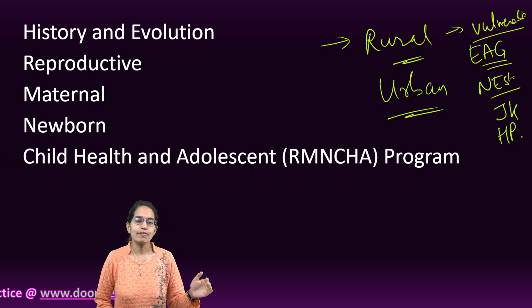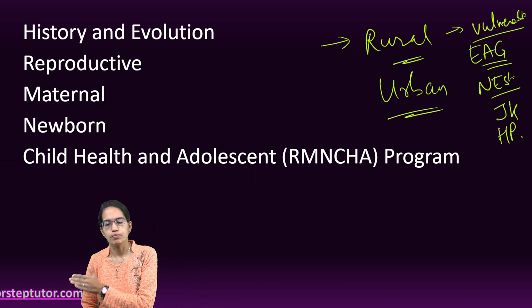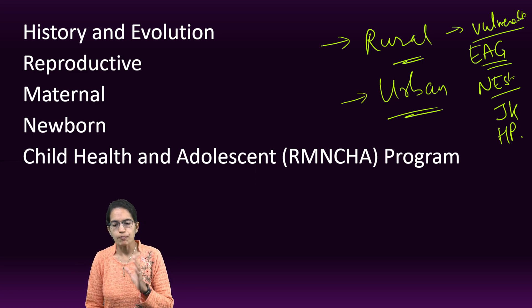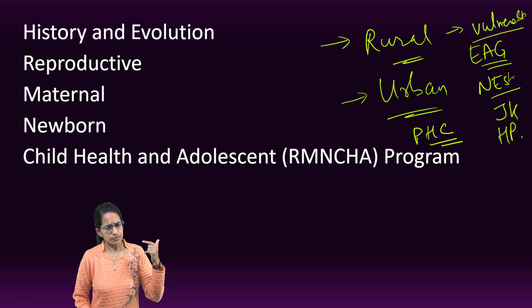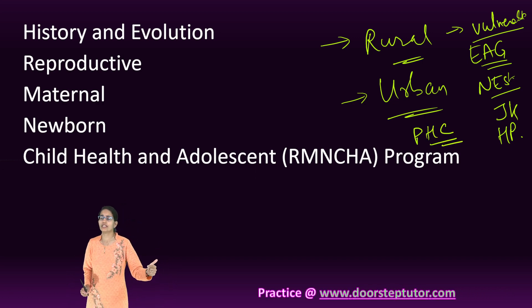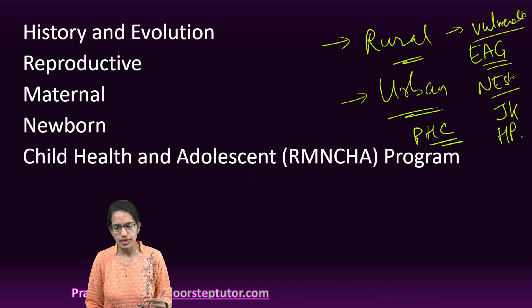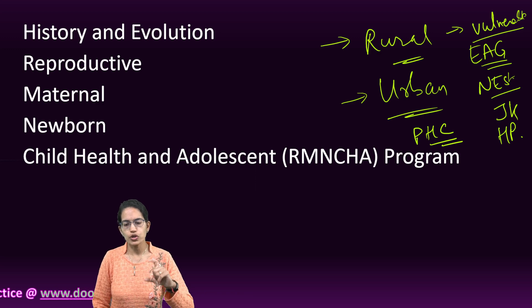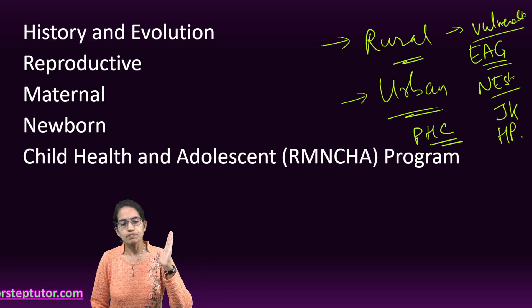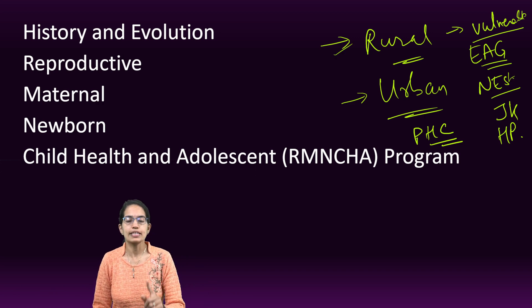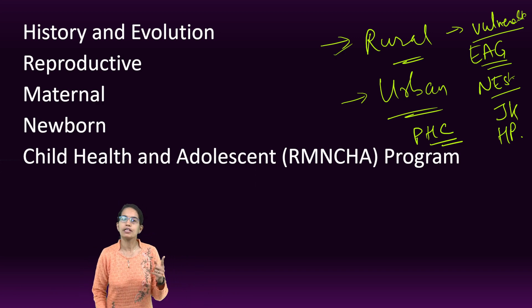The National Urban Health Mission aims to improve the health status of people living in urban areas and provide them with primary health care facilities. For every urban area with a population of more than 50,000, an Urban Primary Health Center would be established. The criteria for having a PHC differs for rural versus urban areas.